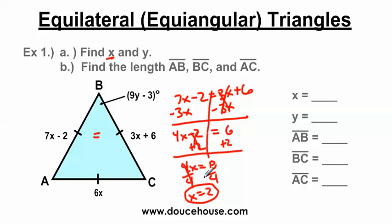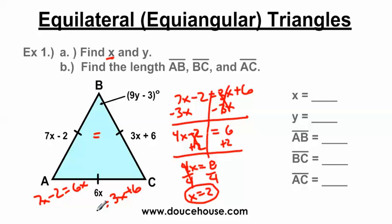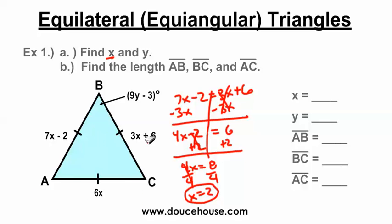So I know X is equal to 2. You might wonder if you could have used different side pairs — for example, 7X minus 2 equals 6X, or 3X plus 6 equals 6X — and yes, you would still get X equals 2. Since all these sides are equal to each other, I could have set any of these sides congruent to each other and still ended up with X equals 2.